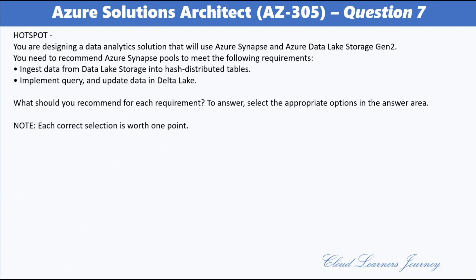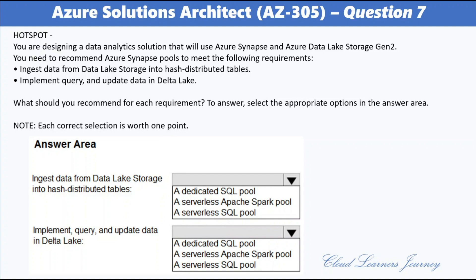Question 7. You are designing a data analytics solution using Azure Synapse and Azure Data Lake Storage Gen 2. You need to recommend Azure Synapse pools for the following requirements: ingest data from Data Lake Storage into hash-distributed tables; and implement query and update data in Delta Lake. For ingesting data into hash-distributed tables, the answer is Dedicated SQL Pool, which minimizes data movement during queries and improves query performance. For implementing query and update of data in Delta Lake, the answer is Serverless SQL Pool, a distributed data processing system for large-scale data that enables analysis of big data in seconds to minutes depending on workloads.